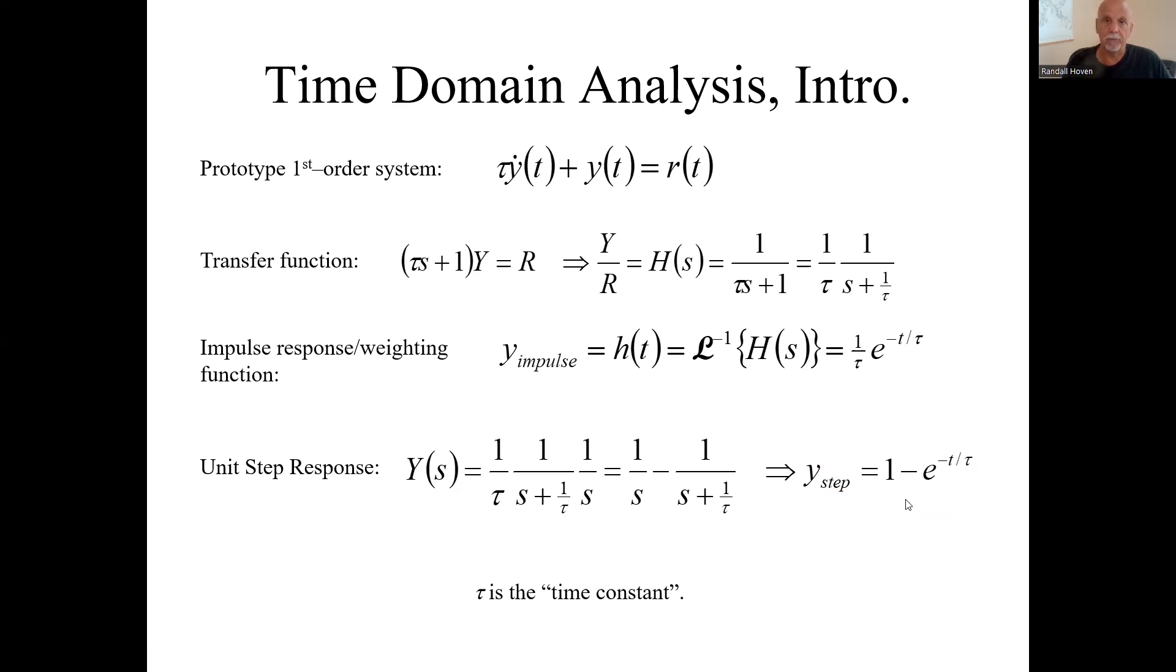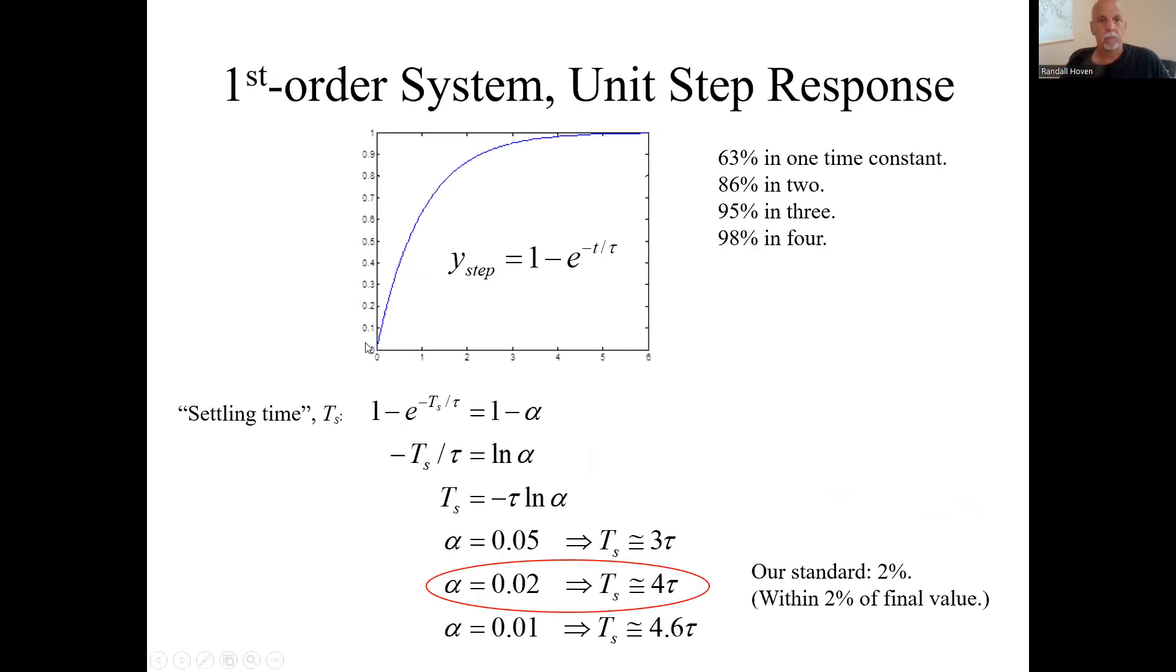Let's see what that looks like. Like this. Step input itself was zero for time less than zero, discontinuously jumped up to one and then stayed there. And this time constant, we can see, we can calculate how close it gets to this final value of one.